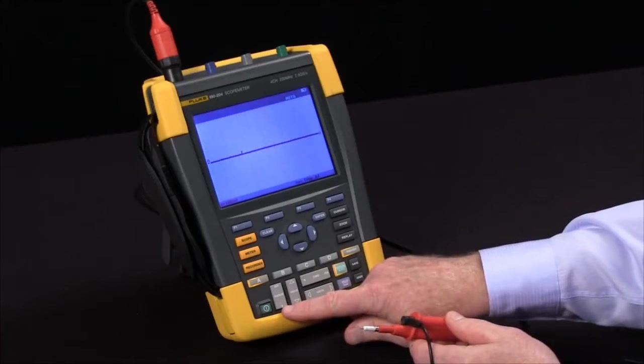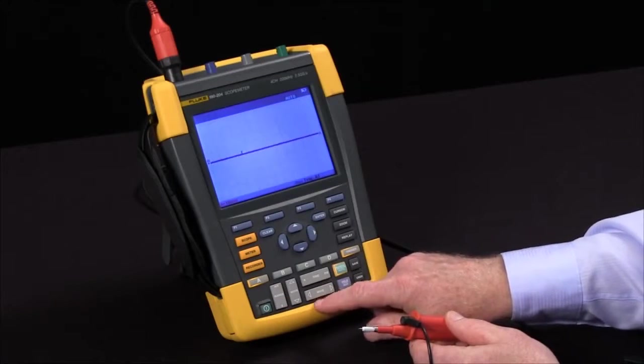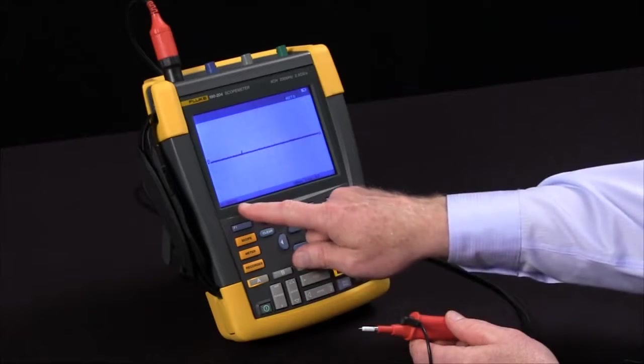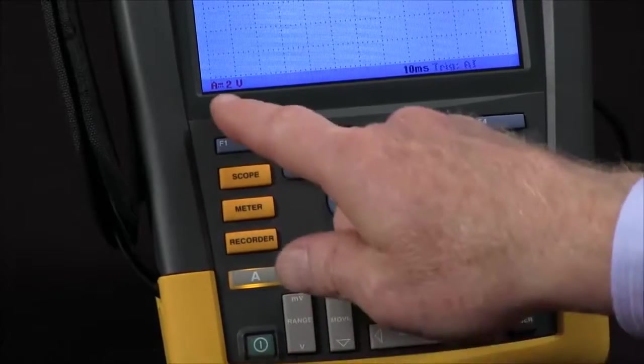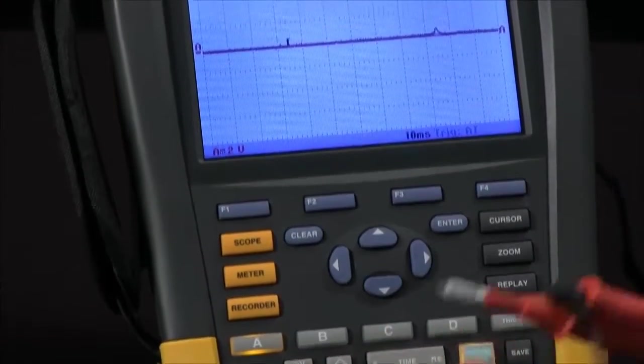Let's make some adjustments to my time base and my attenuator. I'm going to start by changing my volts per division to about 2 volts per division so I've got something I think will be about the right height.